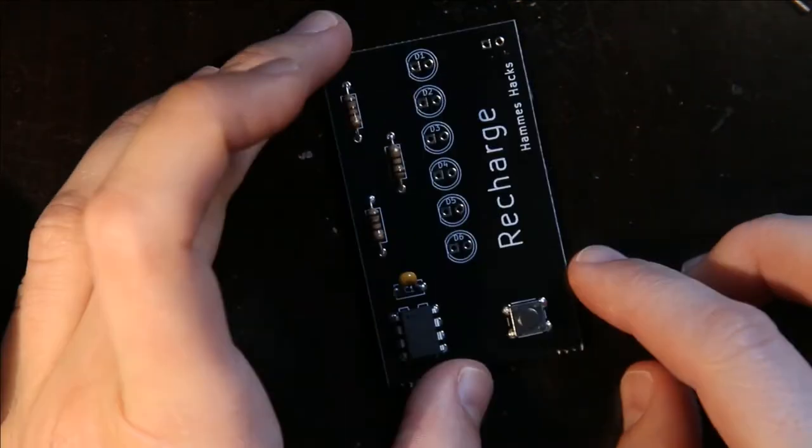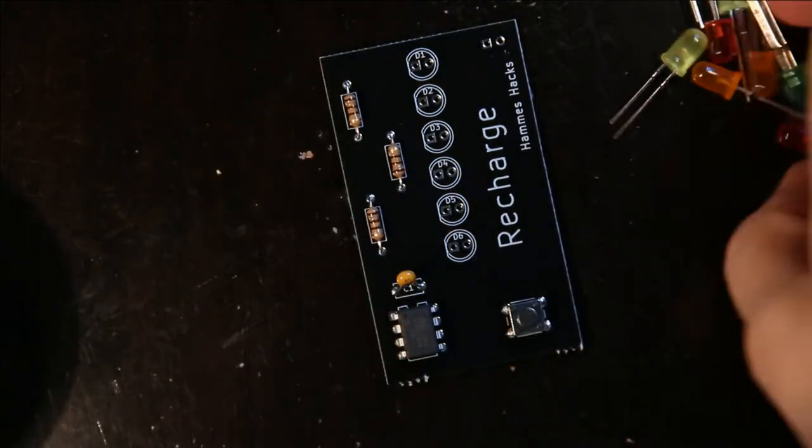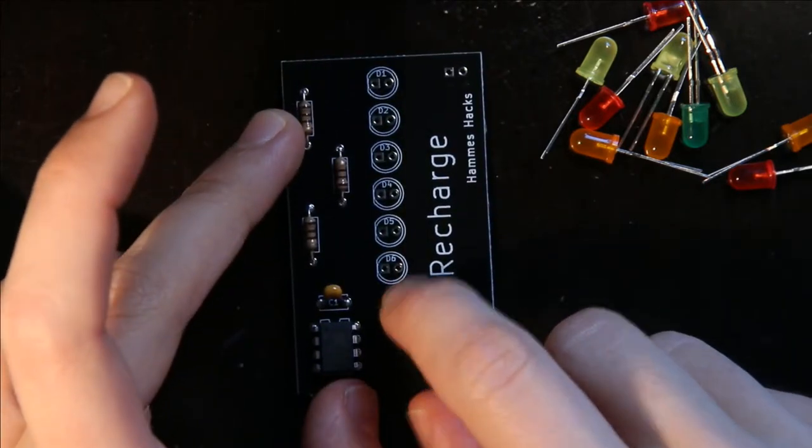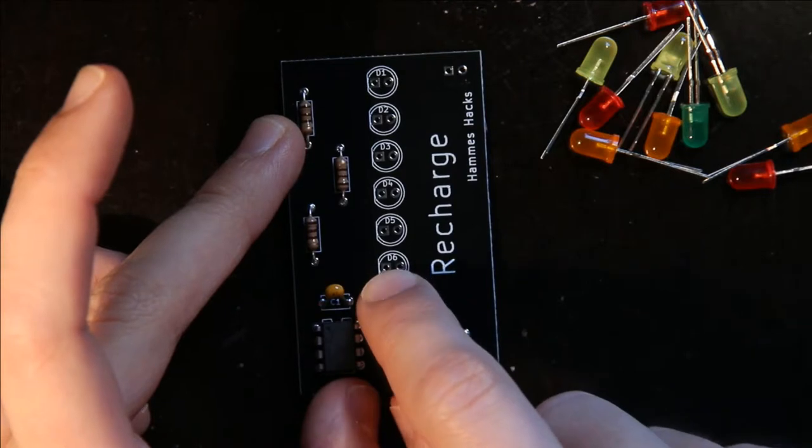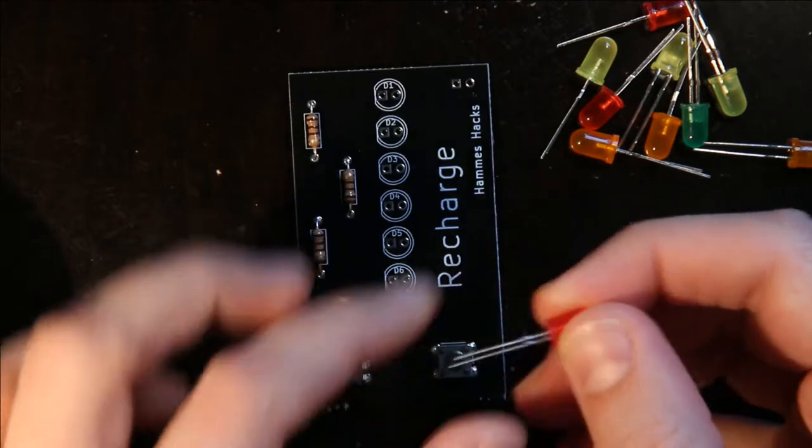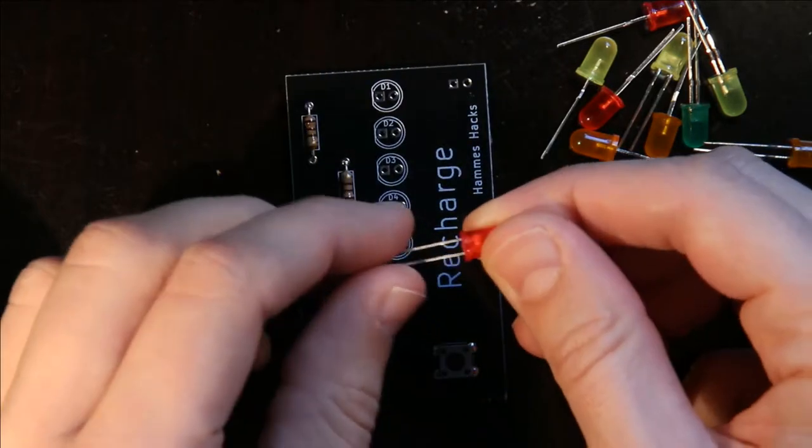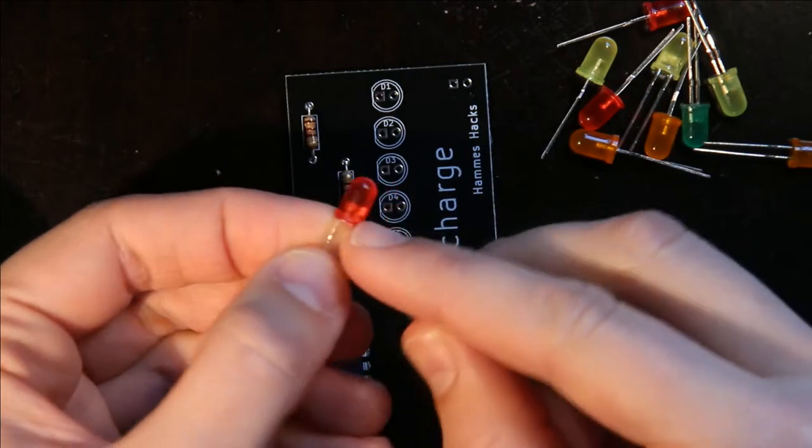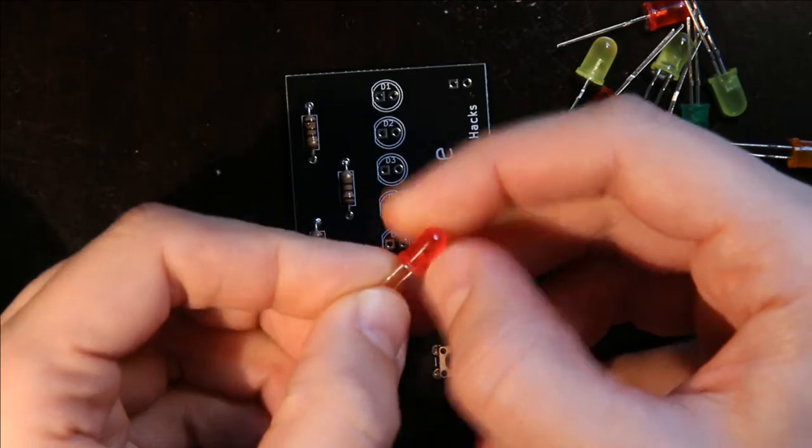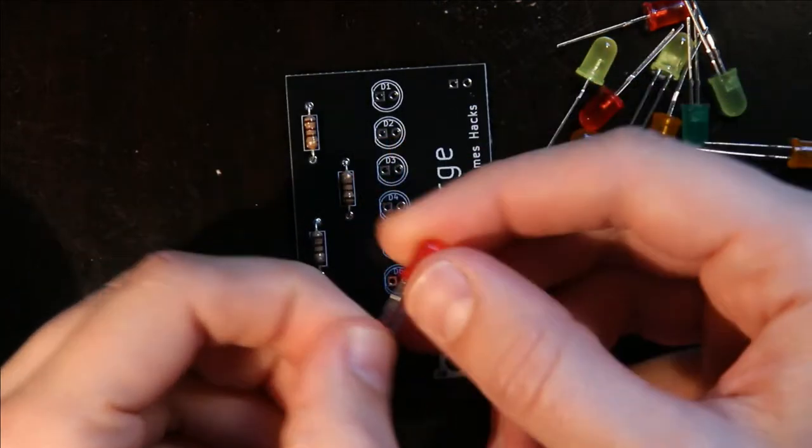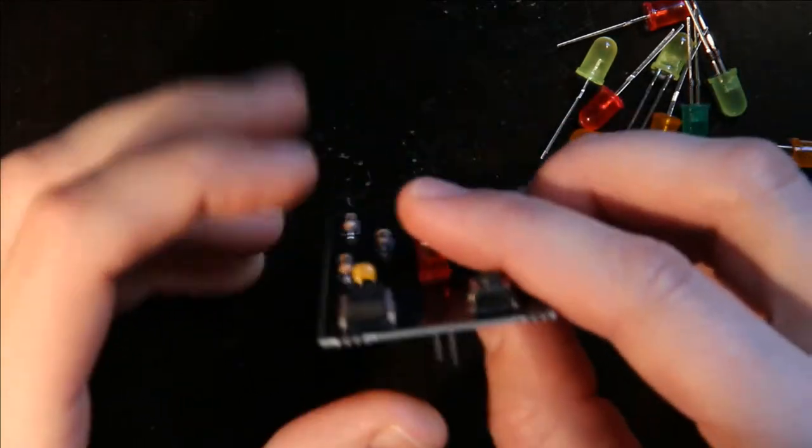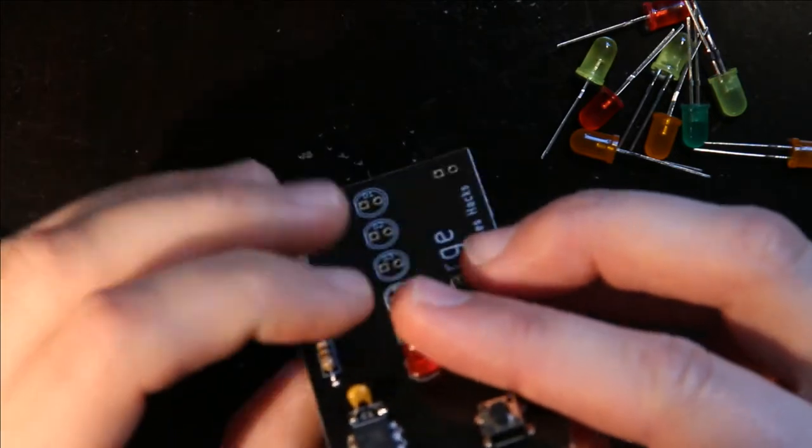Then the last component is the LEDs. If you look at the silkscreen, there's a square pin and a circular pin. The square pin is always pin one and the circular pin is pin two. If you look at the plastic on the LED, it's sort of a hat shape and there's this rim. There's a part of it that's cut off. So in this case, it's this side, which is the short lead. So I know it goes in this direction because the flat part of the plastic matches the flat part of the silkscreen.